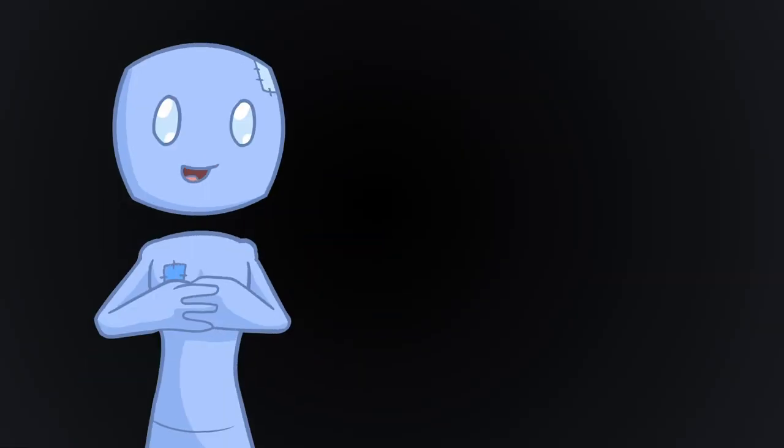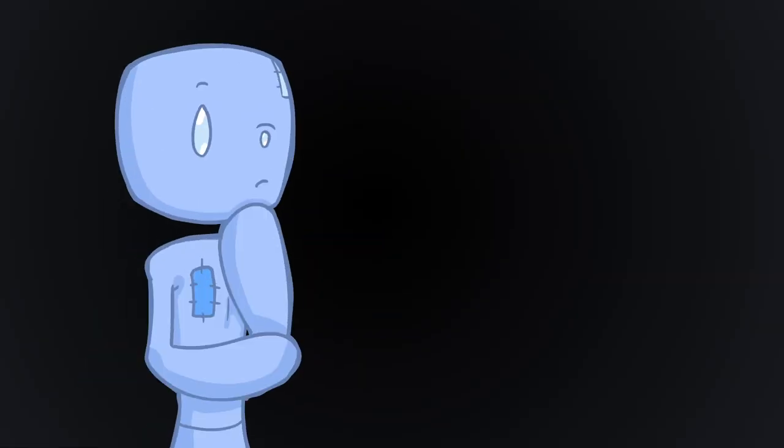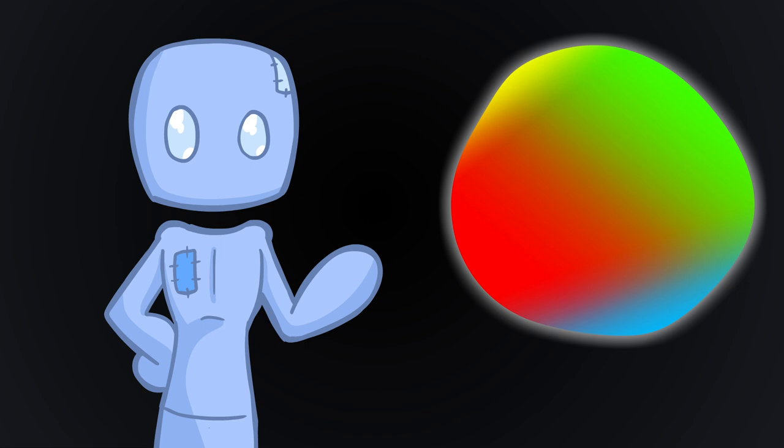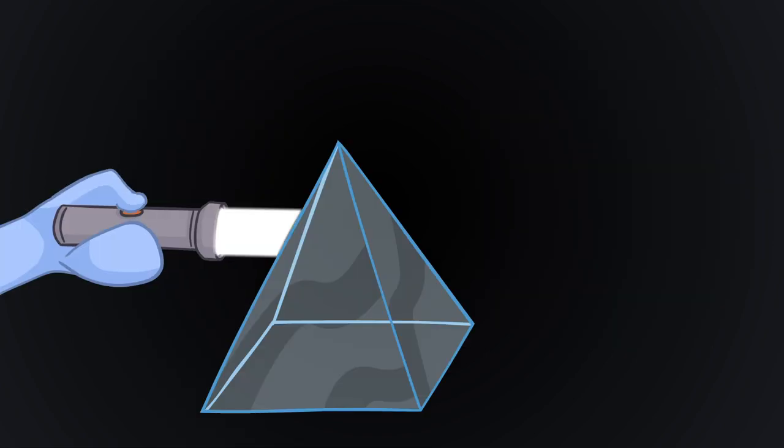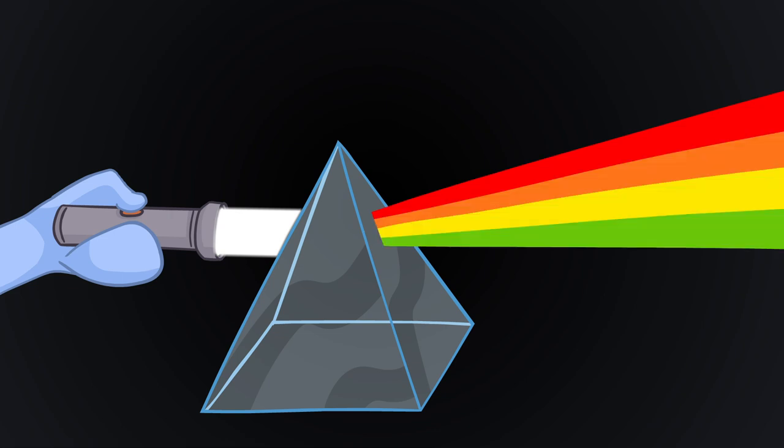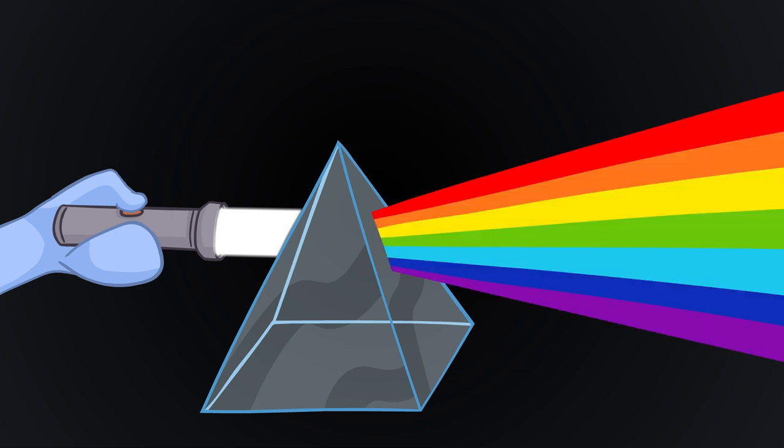When getting started with the new age concept of chakras, first we have to understand the basics of light and color. If you take white light and shine it through a prism, the light will break into a spectrum of seven colors. Red, orange, yellow, green, blue, indigo, and violet.